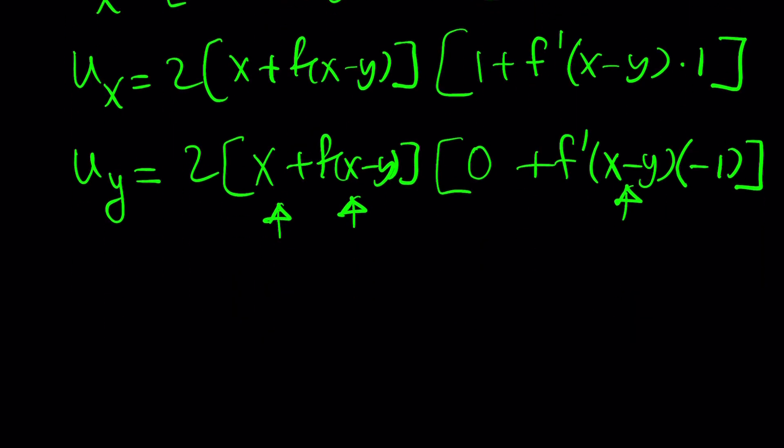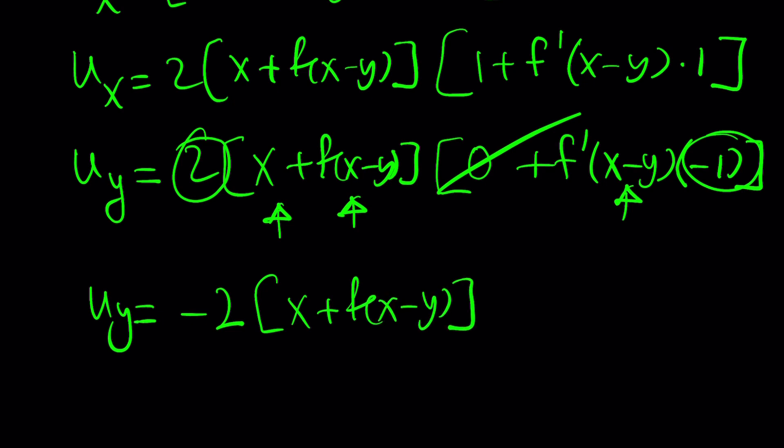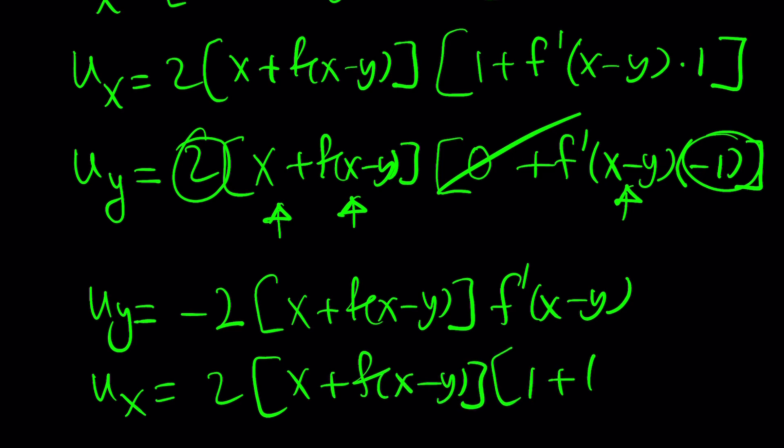Let's go ahead and simplify this. Write this in a little better way because this is 0. This negative 1 is going to be multiplied by this to make 2, and then this will become x plus that, and it's just going to be multiplied by f prime x minus y. So, this is u sub y, and u sub x is 2 times, same thing, but with a positive sign. And multiply by 1 plus f prime of x minus y.